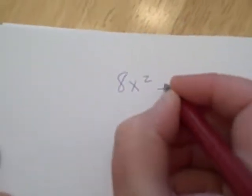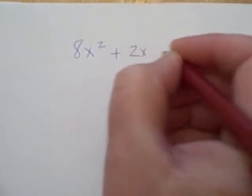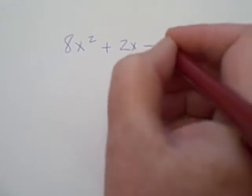And those are the two values where your parabola will cross over the x-axis. So if you have an equation like 8x squared plus 2x minus 4,